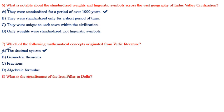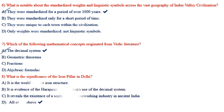What is the significance of the iron pillar in Delhi? Options: C) It is the world's oldest iron structure; it is evidence of the Harappan civilization's use of the decimal system; it reveals the existence of a sophisticated iron working industry in ancient India; or all of the above. The answer is all of the above.